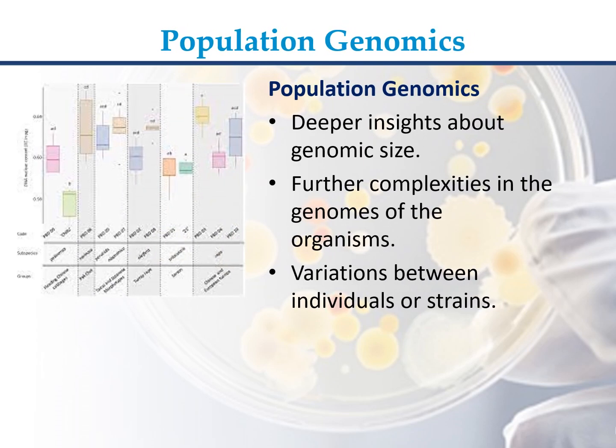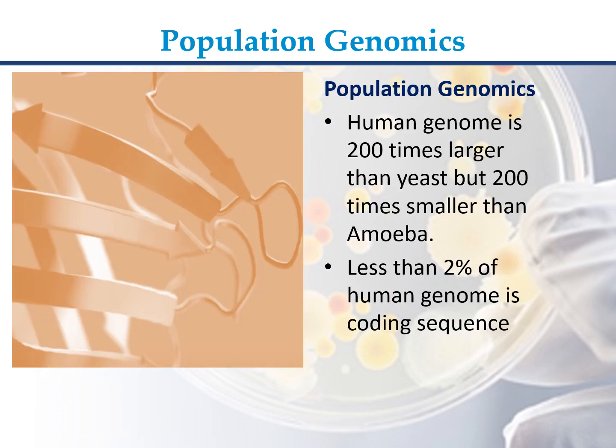Population genomics provides deeper insights about genomic size and further complexities in the genomes of organisms, including variations between individuals or strains. The human genome is 200 times larger than yeast but 200 times smaller than amoeba, and less than 2% of the human genome is coding sequence.